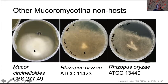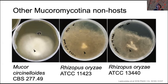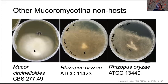We see this in Mucor circinelloides, which is the model species for mucoromycotina and can be manipulated genetically, and also in the sister species of rhizopus microsporus, rhizopus oryzae. So innate immunity.